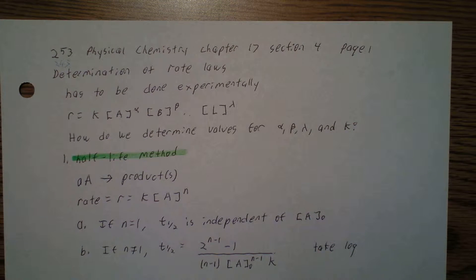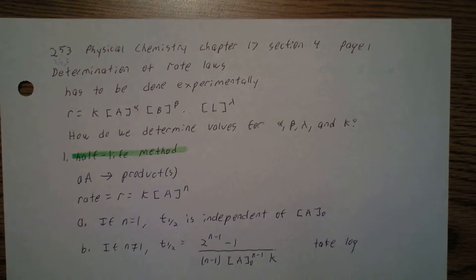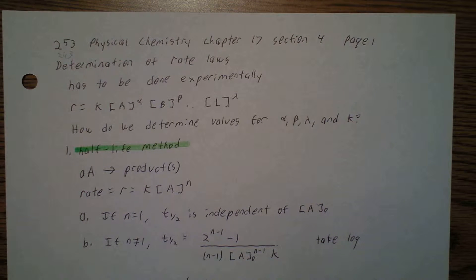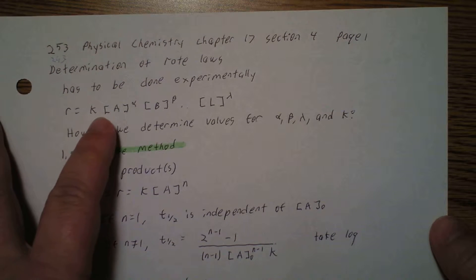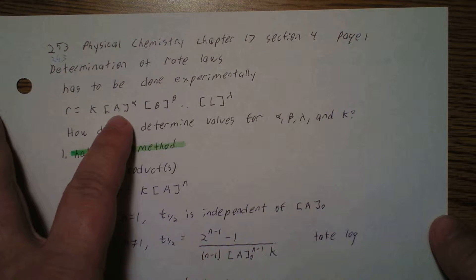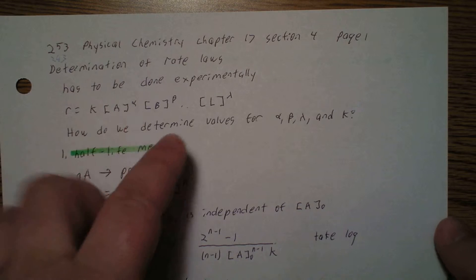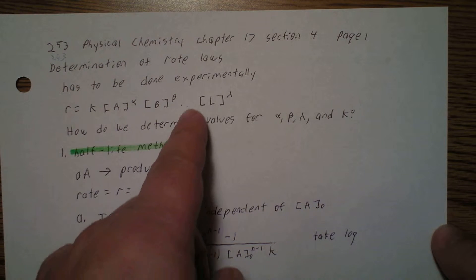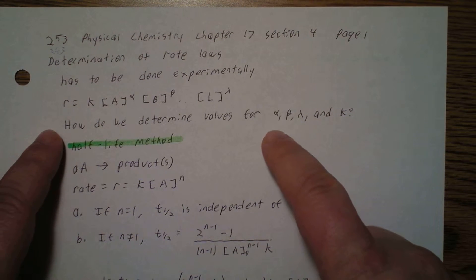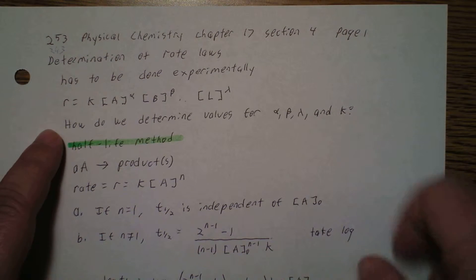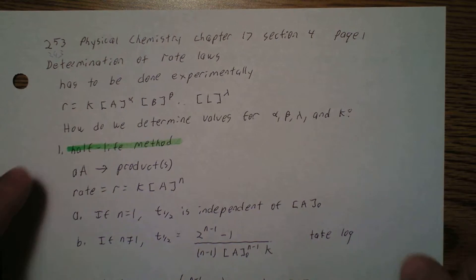We're going to talk about determination of rate laws. This is Chapter 17, Section 4 of Physical Chemistry. This has to be done experimentally. Let's say the rate of a reaction is equal to the rate constant K times the concentration of A to the alpha power, times the concentration of B to the beta power, and so on up to L to the lambda power. How do we determine these values for alpha, beta, lambda, and the rate constant K?